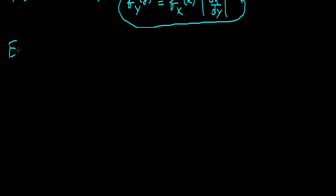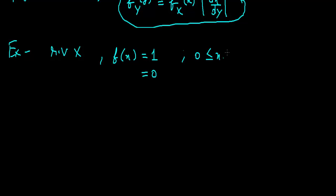I will show you a small example that will cover everything. There is a random variable x having a density function f of x equals 1 for a certain range, and 0 otherwise. We need to find the density function for the function y equals 3x plus 1.